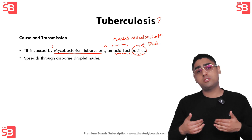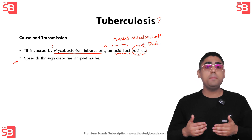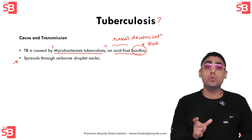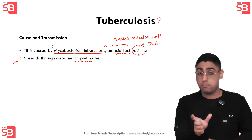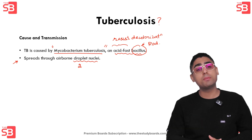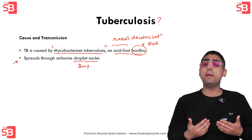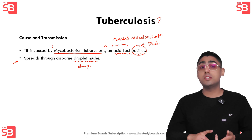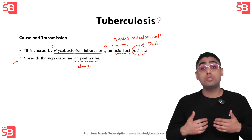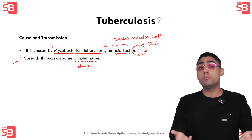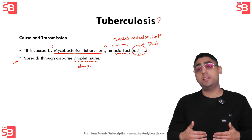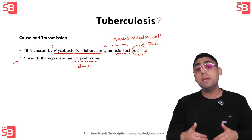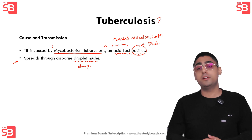Talking about transmission, TB spreads through tiny particles in the air known as droplet nuclei. These particles are expelled whenever an infected person coughs, sneezes, or talks. So whenever a person nearby breathes in these particles, they may become infected with TB.